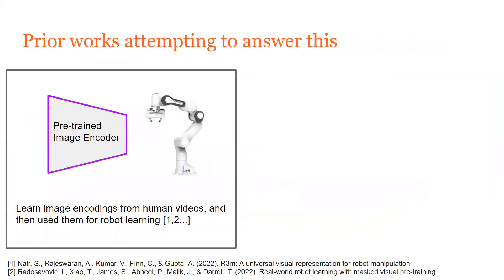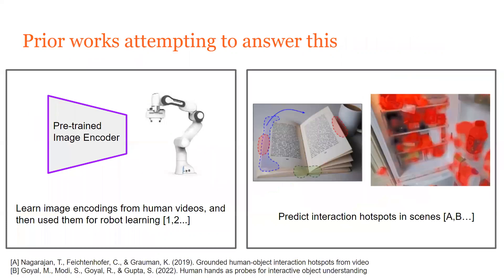Several prior works have attempted to answer this question. One line of work has looked at training image encoders from human videos that can be used for downstream robot learning through effective representations. Another line of work has looked at predicting interaction hotspots from human videos. However, these prior works do not consider any trajectory-level behavioral insights from human videos.